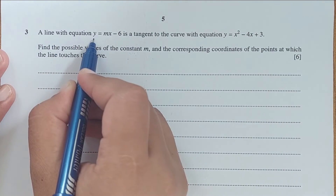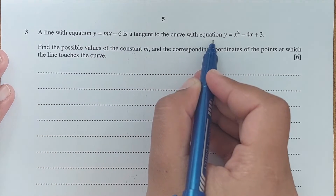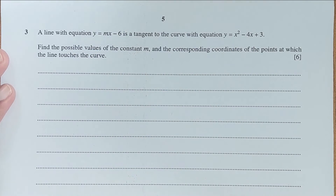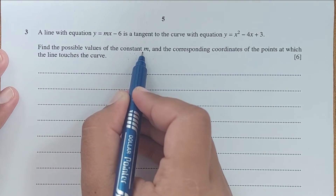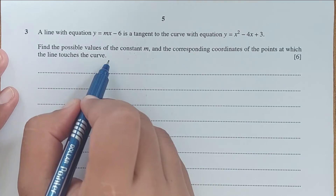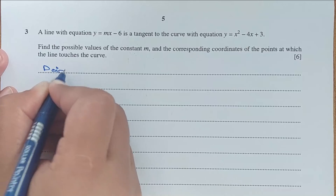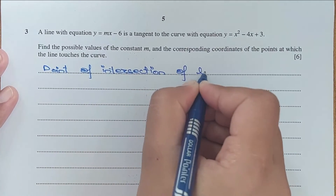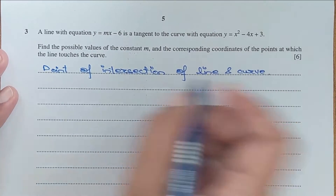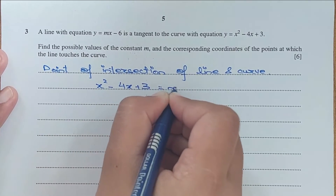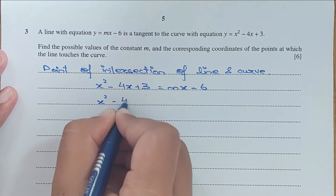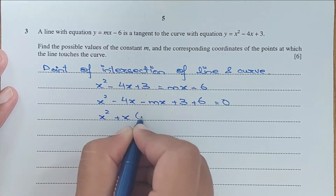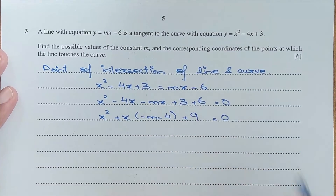For question number 3, a line with equation y equals mx minus 6 is tangent to the curve y equals x² minus 4x plus 3. This line touches the curve at one point. Find the possible values of constant m and the corresponding coordinates of the point at which the line touches the curve. For the point of intersection, x² minus 4x plus 3 equals mx minus 6, giving x² minus (m + 4)x plus 9 equals 0.